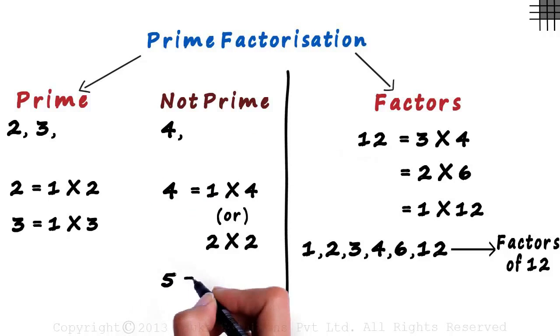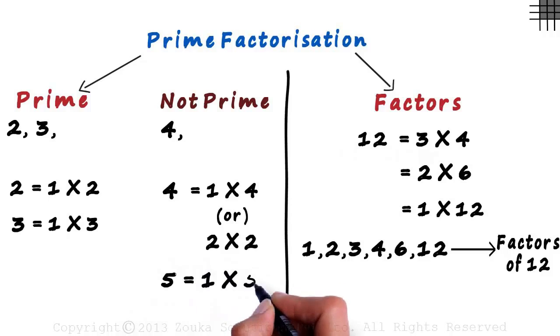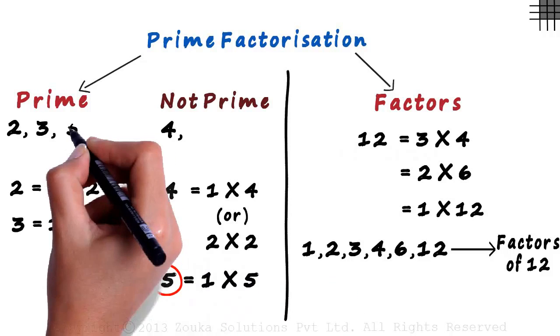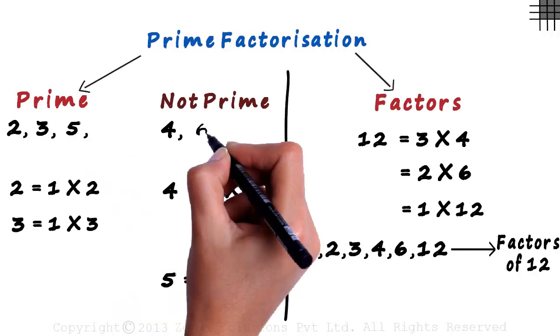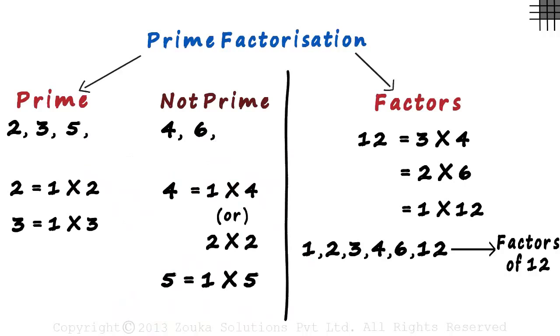The number 5 can only be written as 1 multiplied by 5, which is why 5 is a prime number. 6 is not a prime number. 7 is a prime number. 8 and 9 are not prime numbers. And that's how the list progresses.